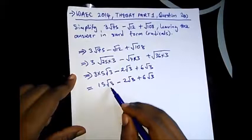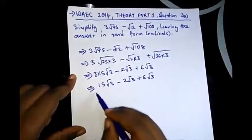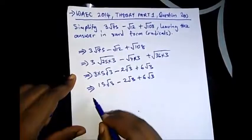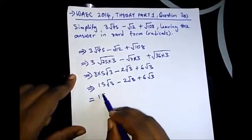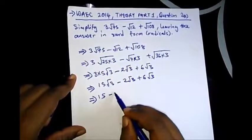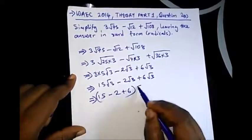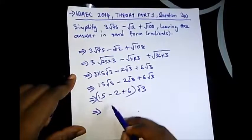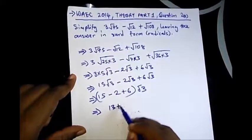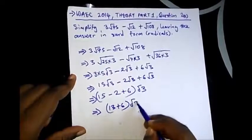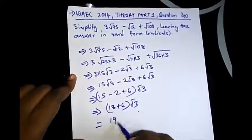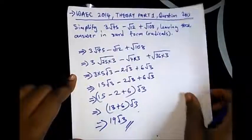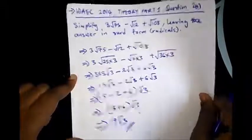Since they all have the same roots, that's the square root of 3, we can perform addition and subtraction operation on all of them. So we have (15 - 2 + 6)√3. What is 15 minus 2? 15 minus 2 is 13 plus 6, so we have 19√3. This is our final answer.